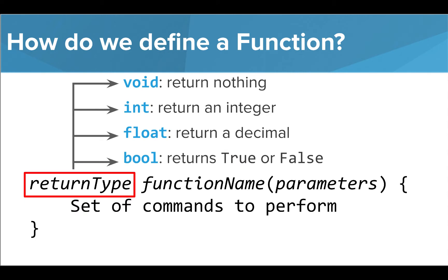In this course, we're only going to need to use one of four different keywords here. We use the keyword void if our function will not return anything. We use the keyword int if our function will return an integer value. We use the keyword float if our function will return a decimal value. And we use the keyword bool if our function will return a boolean value, true or false.